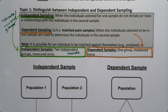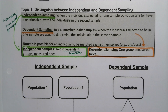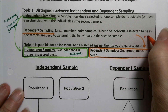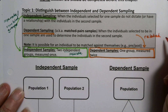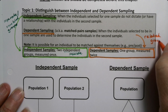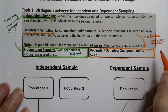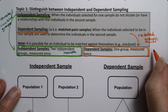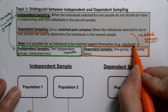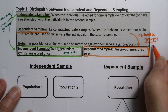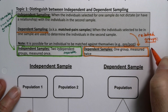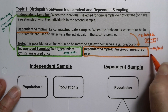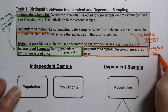And over on the dependent side we would have related groups. Now they can be related in a couple of different ways. They can be related in terms of it being just one group — pre and post, or before and after. That's literally one group of people.